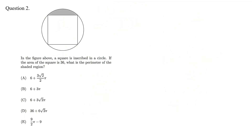The next question: in the figure above, a square is inscribed in a circle. If the area of the square is 36, what is the perimeter of the shaded region? We need to find the perimeter. This is a square and the area is 36, so the side of this square will be 6.